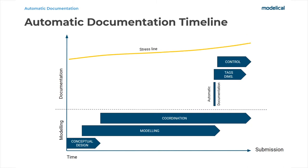With automatic documentation, the aim is to facilitate the work of generating documentation and ensuring that this is done in a controlled manner. The creation of views and plans happens at a specific moment and not over time, so it takes less time and dedication, in favor of more time for modeling and coordination and more time for tagging, dimensioning and making the control.